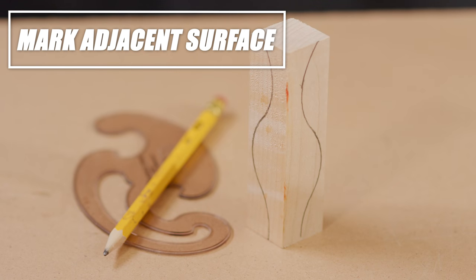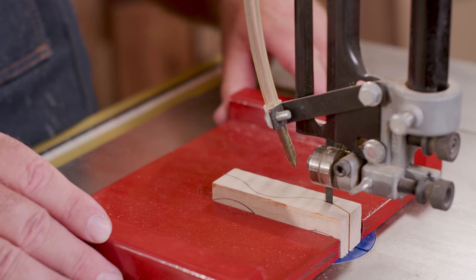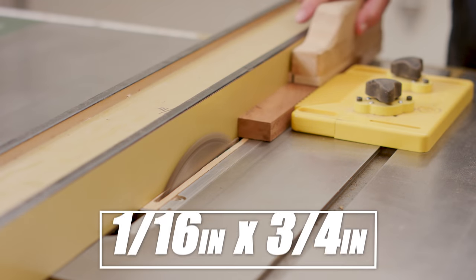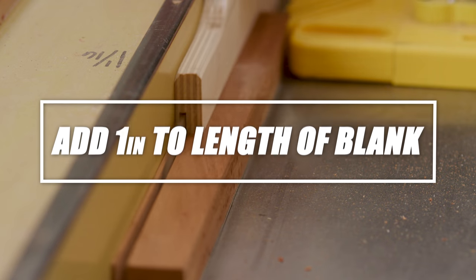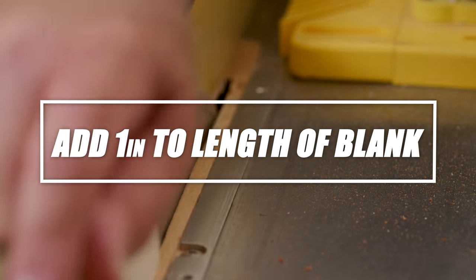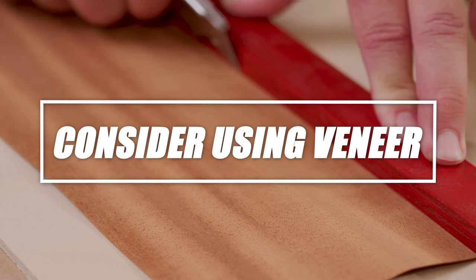You can also cut thin strips of wood about 1 16th inch thick by 3 quarter inch wide by the length of a blank, plus 1 inch. Or, cut veneer into strips using a craft or utility knife.